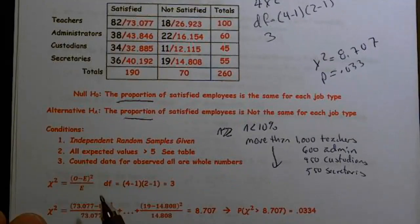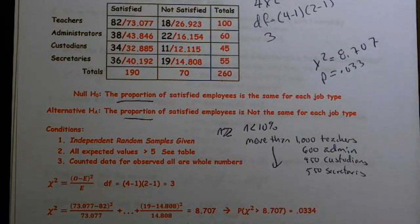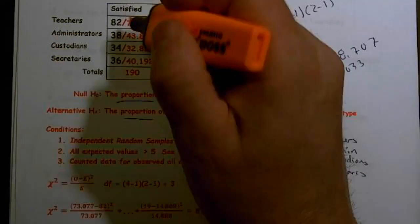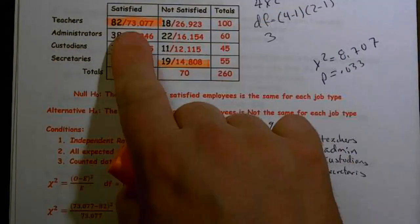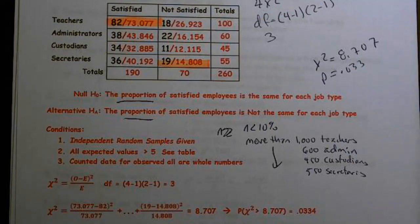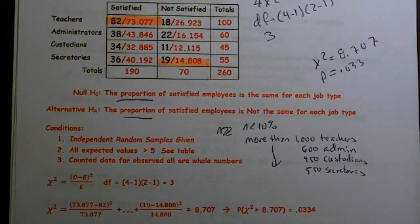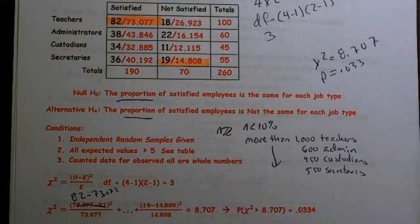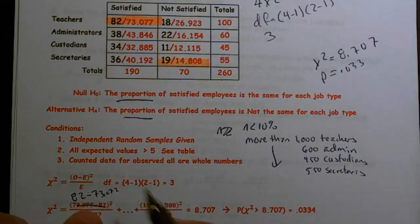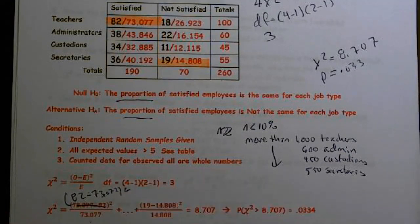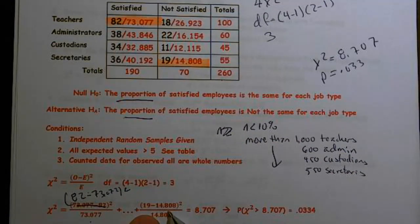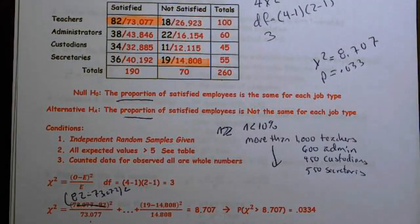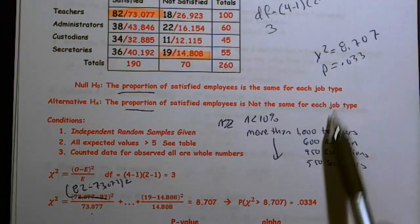So we write our equation: observed minus expected squared over expected. And by the way, with a chi-square test, you need to specifically name it. So you have to write, this is a chi-square test of homogeneity. So we only need to do the first one and the last one. So 82 minus - well, that's a bad typo. These are swapped. This needs to be 82 minus 73.077, because it's observed when we observed 82 minus the expected squared over the expected. Then we have 19 minus 14.808 squared over the 14.808. We already had the 8.707 and a p-value of 0.033.